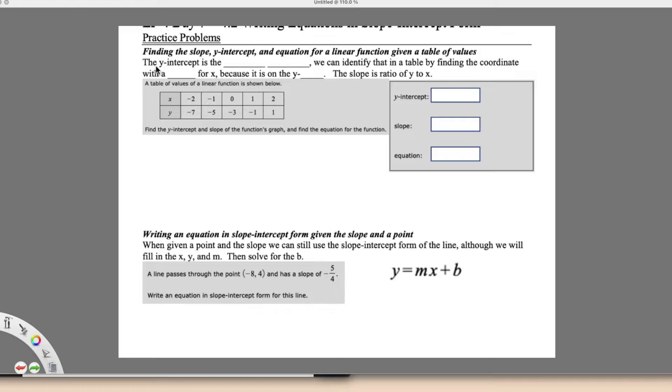So we're going to find the slope, the y-intercept, and the equation for a linear function given a table of values. The y-intercept is the starting point, and again I always refer to it this way, starting point.